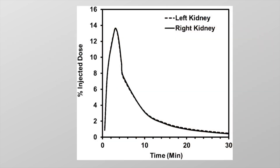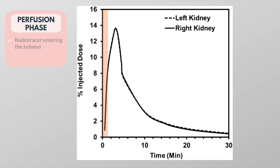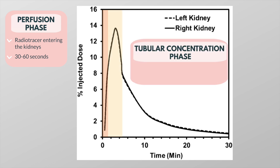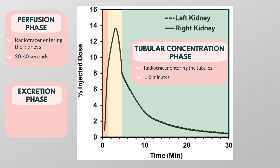A typical renogram has three phases. The first phase is the perfusion phase, representing the radiotracer entering the kidneys, and it usually lasts about 30 to 60 seconds. The second phase is the tubular concentration phase, characterized by the radiotracer appearing in the tubules; this lasts about 1 to 5 minutes and is represented by a peak in the renogram. The third phase is noted by a downslope in the renogram indicating excretion of the radiotracer, which usually starts at 4 to 8 minutes after radiotracer injection.